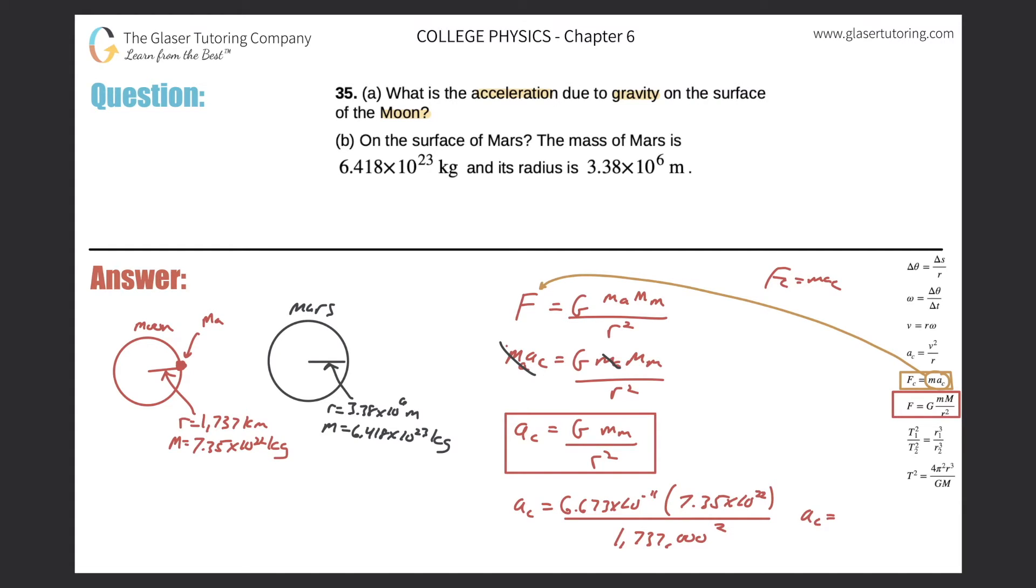And now, just calculate. So 6.673 times 10 to the minus 11 times 7.35 times 10 to the 22nd divided by 1,737,000 squared. So I get a value of 1.63 after I round. 1.63 meters per second squared. There's the acceleration due to gravity. That's great, that's letter A. Let's take a look now at letter B.